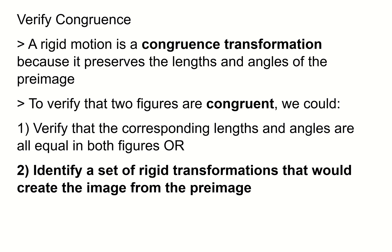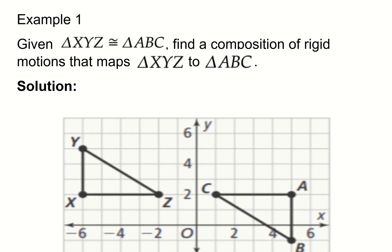We're going to focus on the second method — identifying the set of rigid transformations. In other lessons, we'll look at the first method of verification using corresponding lengths and angles. For now, let's verify that triangle XYZ is congruent to triangle ABC by finding a composition of rigid motions that maps triangle XYZ to triangle ABC.